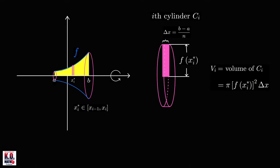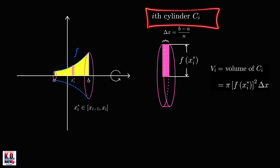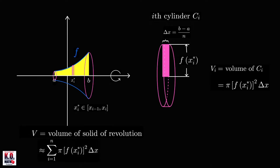Because the region is approximated using n rectangles, we revolve each rectangle to generate a right circular cylinder. With n rectangles, we generate n cylinders. The volume of the solid can be approximated by the sum of the volumes of these n cylinders.